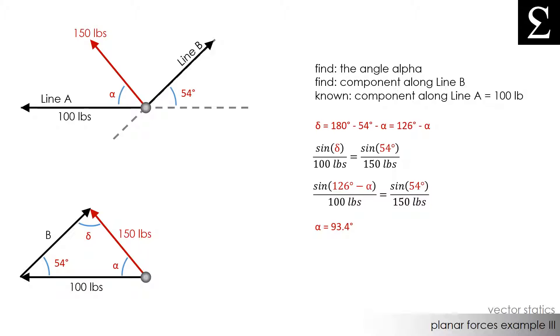Now since we know what angle alpha is, we can use the law of sines once more to find out what the component of the 150 pound force is acting along line B. I'll write that sine of angle alpha, which is 93.4 degrees, divided by side B equals sine of 54 degrees divided by 150 pounds.